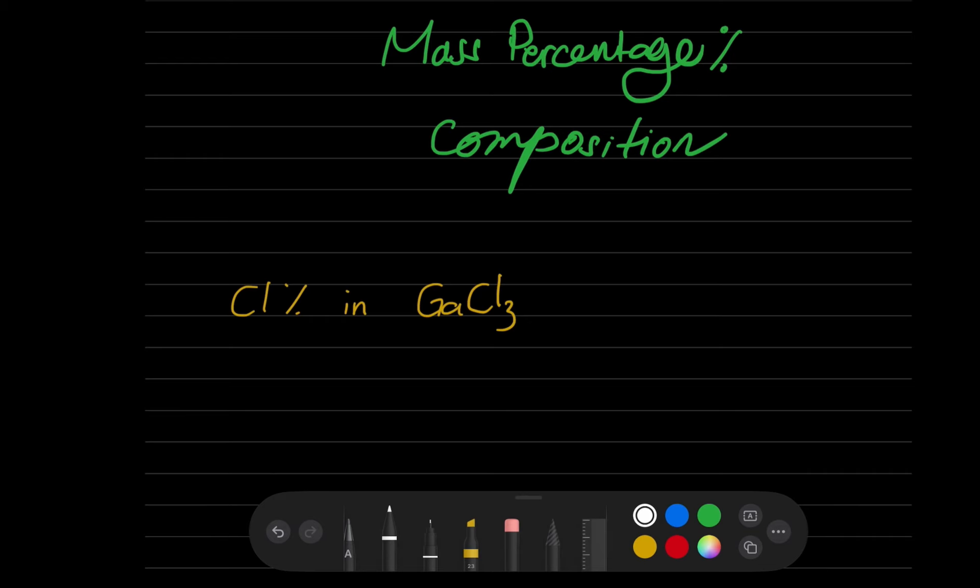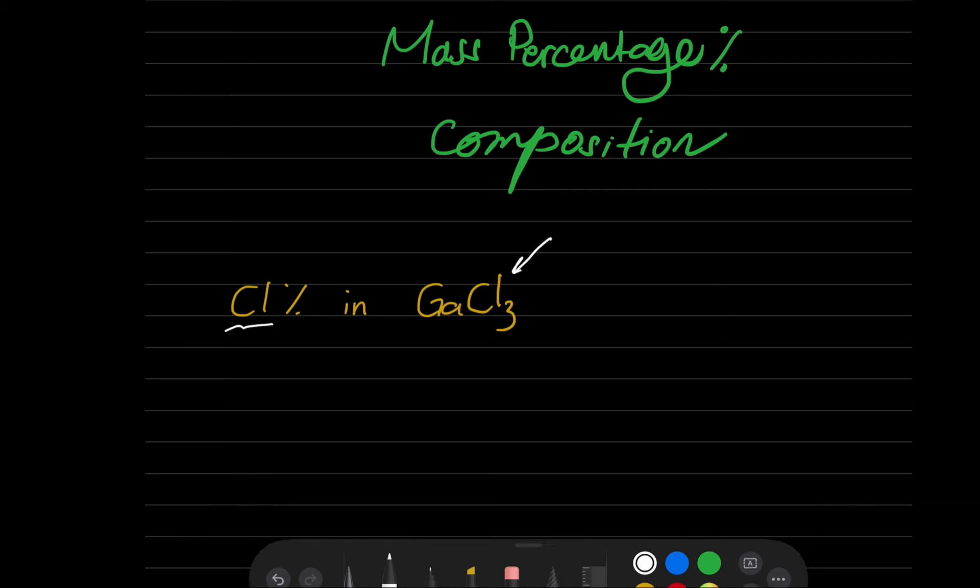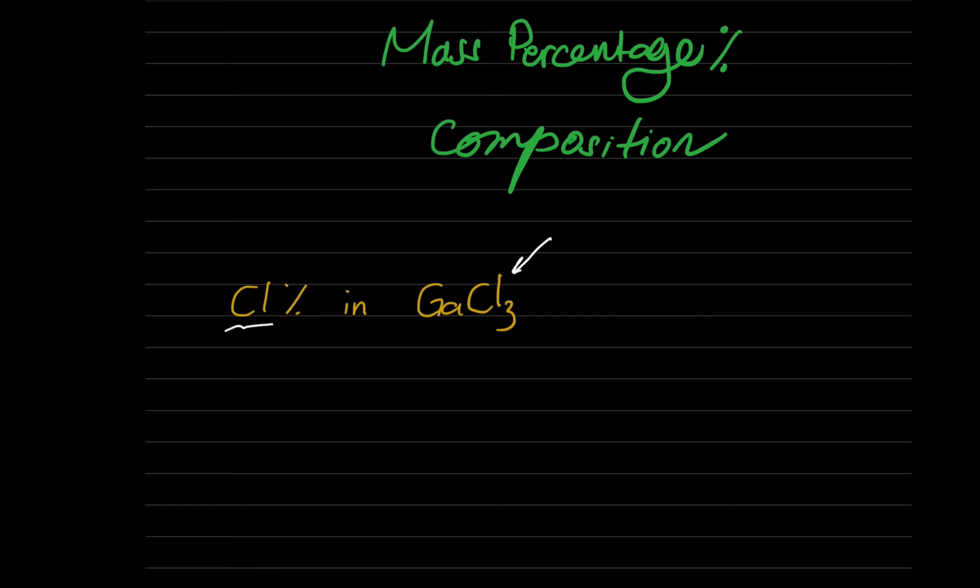And there is a beautiful rule for that. So let's take the first example here which is chlorine. We need to calculate the percentage by mass of a chlorine atom in this compound which is gallium chloride. So how can I do this process?